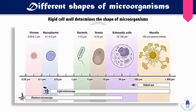Bacterial size range also extends from 0.1 to 14 micrometers. Yeast is a type of fungi — the smallest fungi — having a size of 3 to 10 micrometers. These are prokaryotic cells. Eukaryotic cells, including yeast, have a size of 10 to 100 micrometers. Larger still is mycelia, a type of fungus with a size of 100 micrometers that can extend up to several meters and is visible to the naked eye.